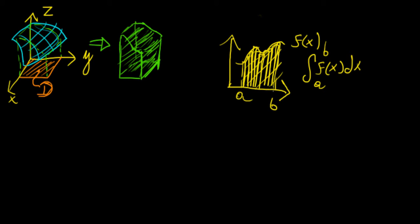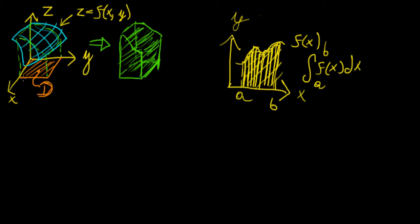The same concept is applied to define a double integral. We start by defining some surface. In one dimension we have an interval a to b, but in two dimensions we need to define limits along both the x and y directions, because z is a function of x and y. We need boundaries in both x and y to define the region of integration, usually called D, for two dimensions.